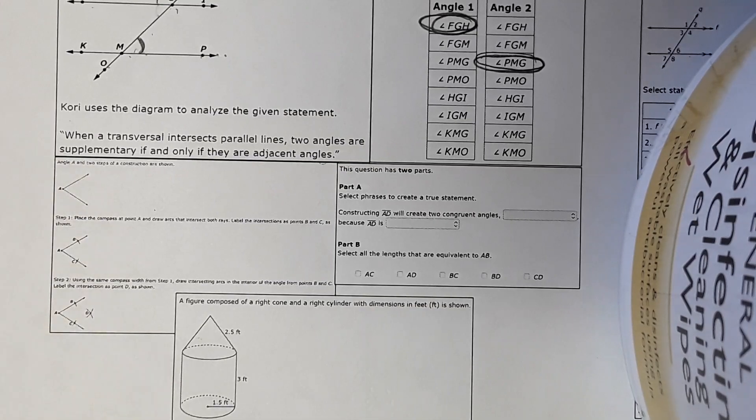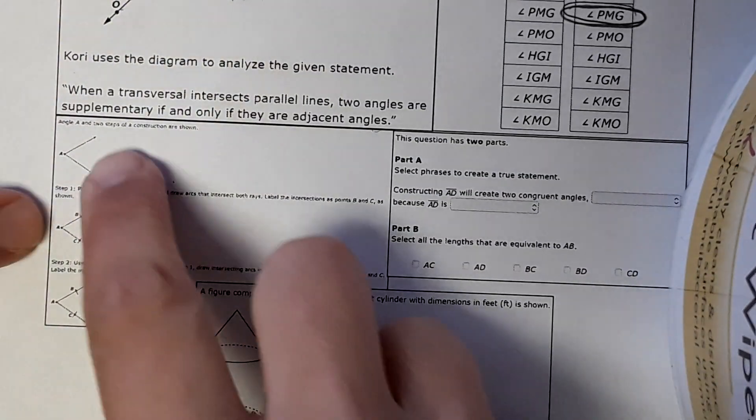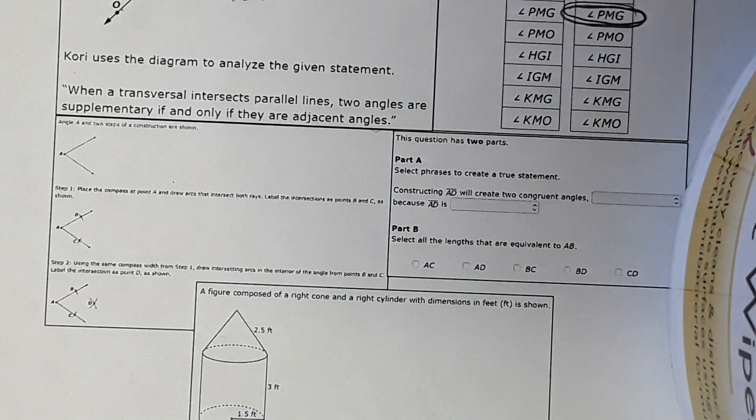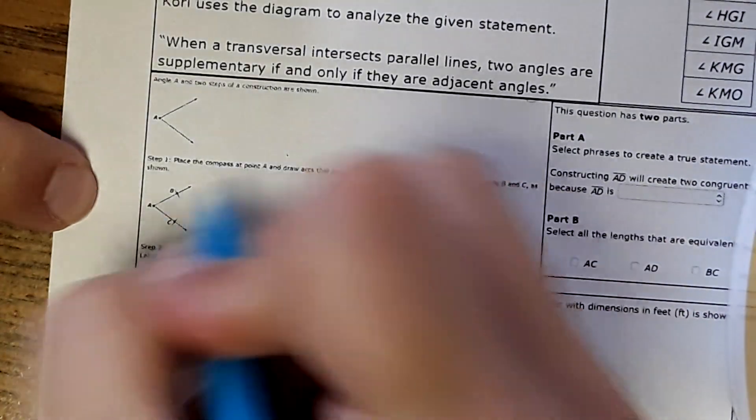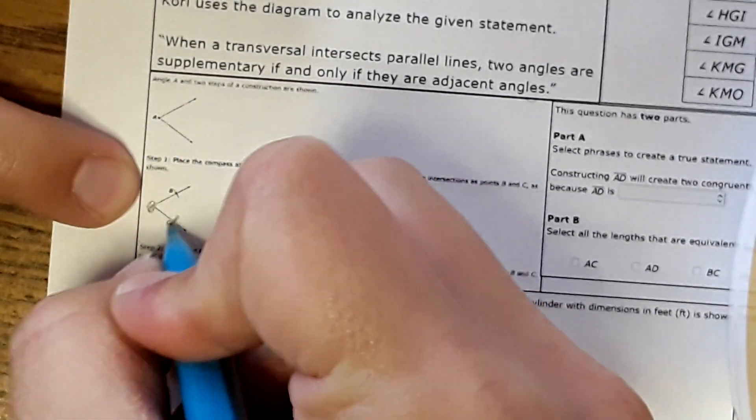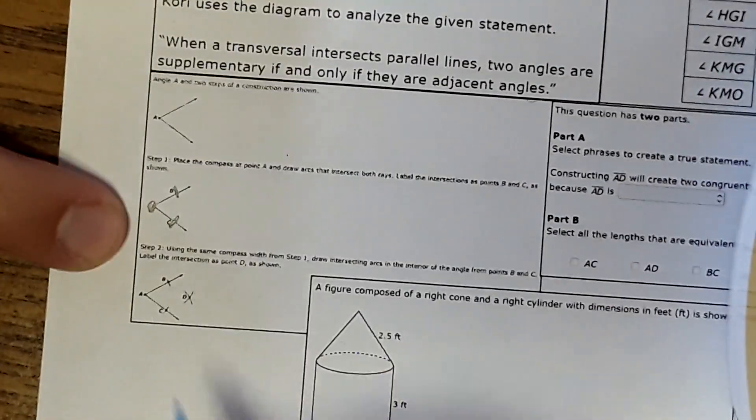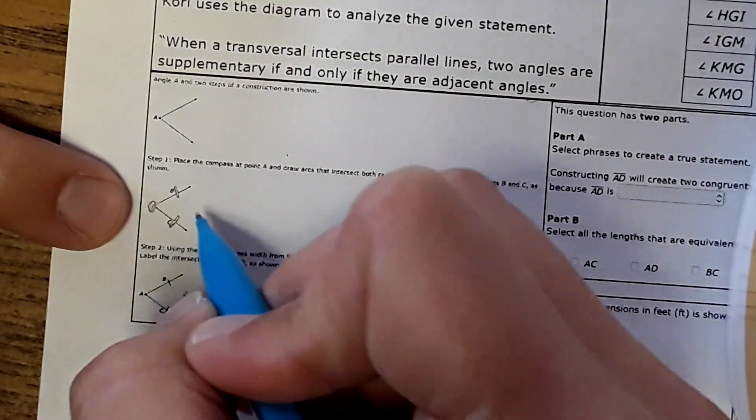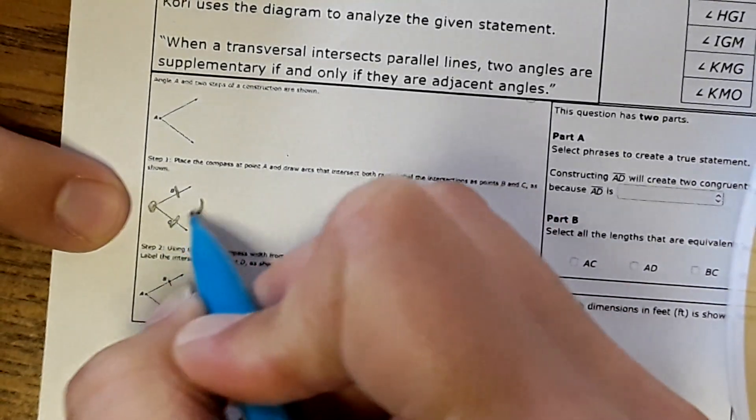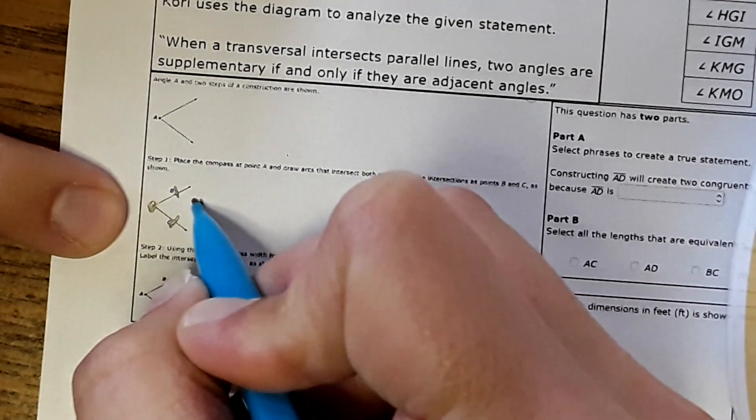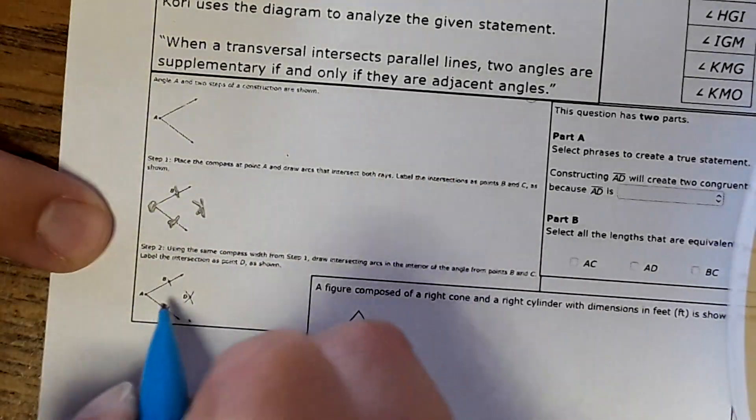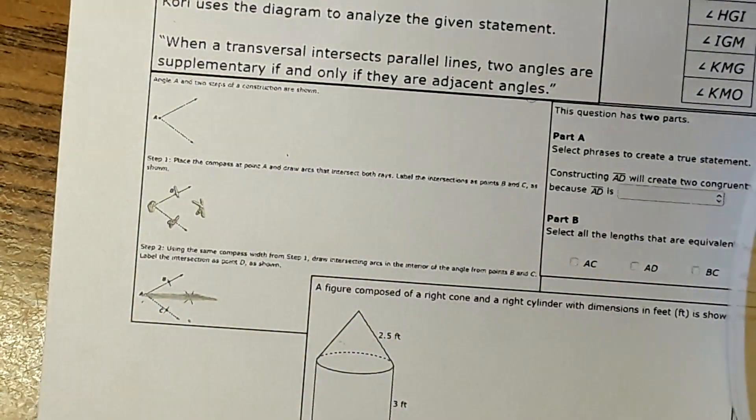The next one is a construction problem. They won't have any problems where you actually have to do a construction with a compass because it is a computer-based test, but they will have questions kind of like this. So this here, it shows you have an angle construction. They place the compass right here and they made a mark right here and right here the same distance from that point. Then they took the compass and made a mark right here. So they put it here and right here. And that's what they show here. And then the next step would be to connect that and it would be an angle bisector.